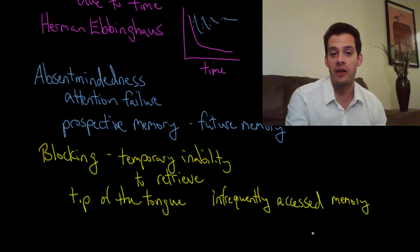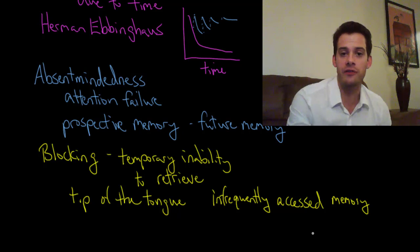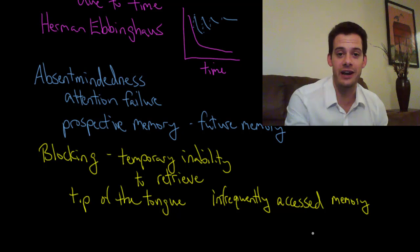In the next video we'll look at some other memory failures but for now these are our first three: transience, absent-mindedness and blocking. Hope you found this helpful, if so please like the video and subscribe to the channel for more. Thanks for watching.